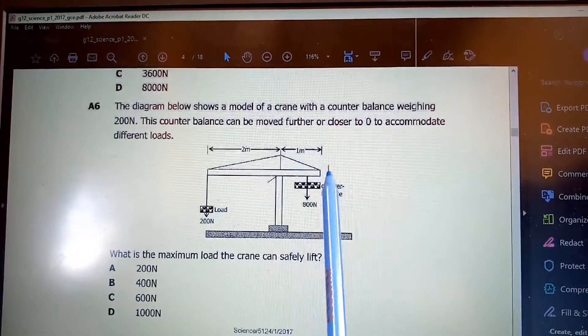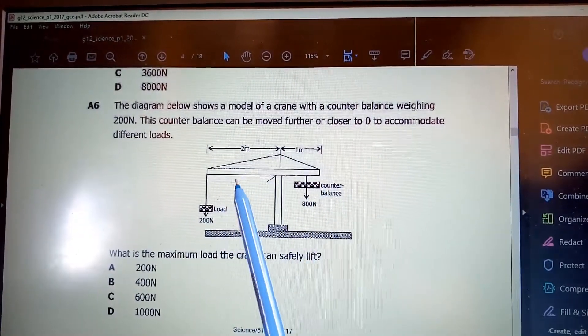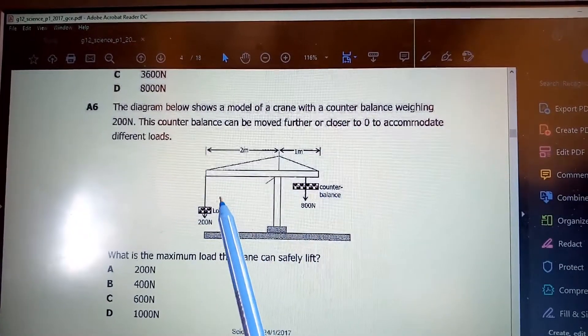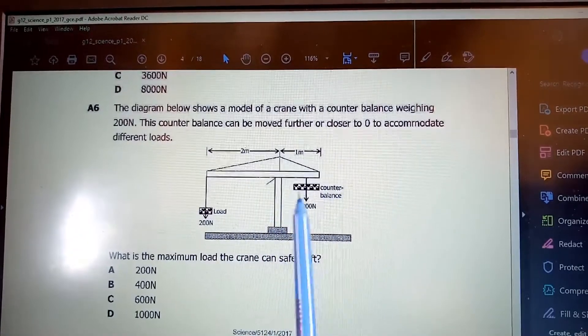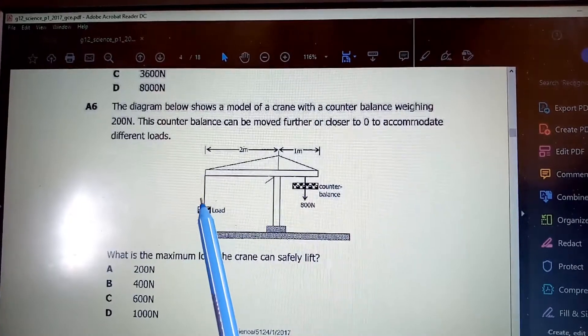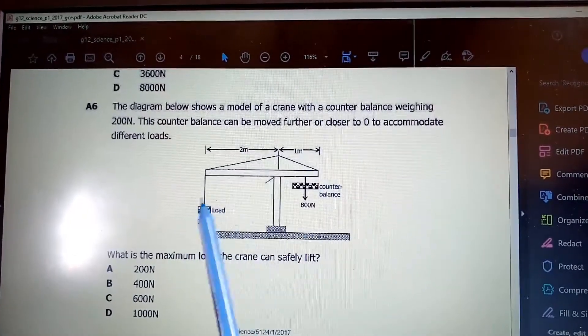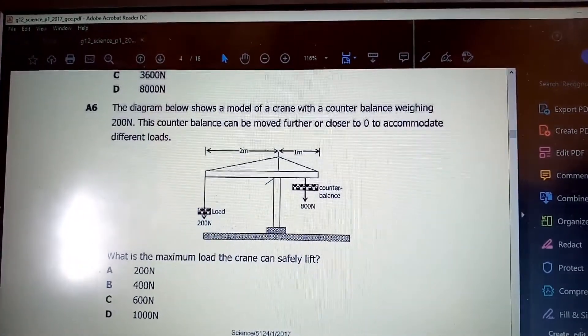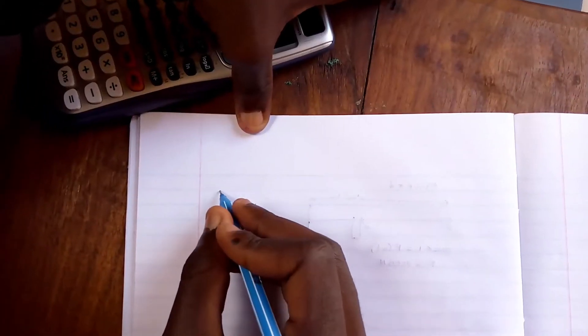So we already have the counterbalance. Now we need to find the maximum force which can be put as a load this side to be lifted when this is at the far end. So we also put the force we want to find at the far end of this side of the crane.